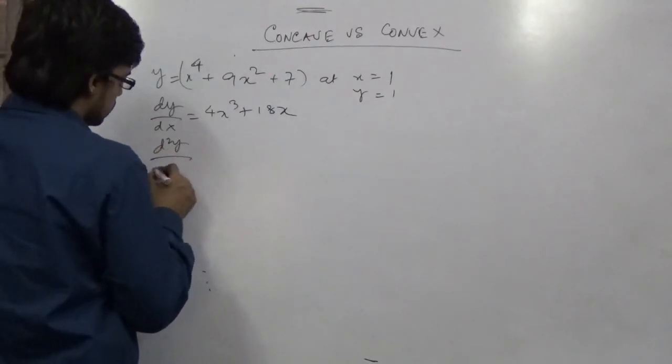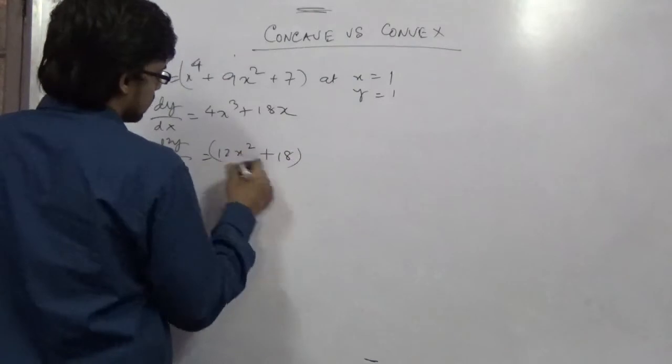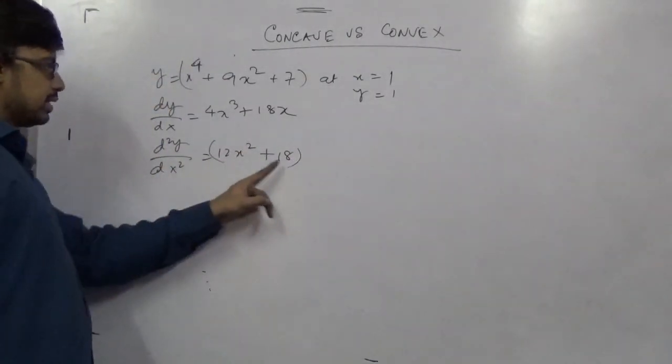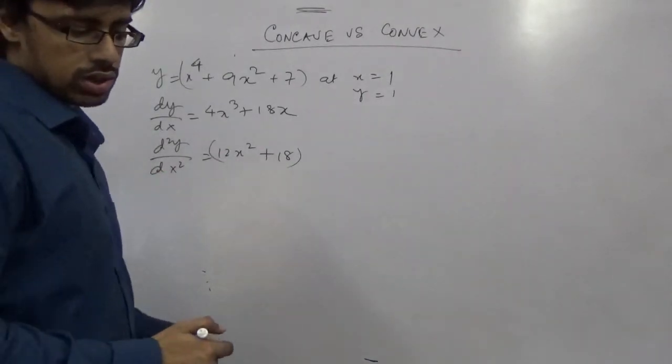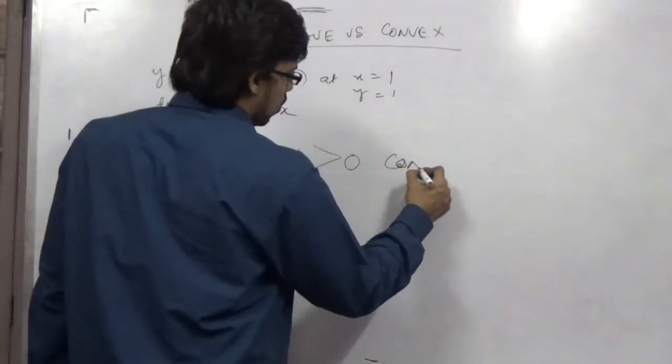What is d2y dx squared? 12x squared plus 18. So now you can see that this is positive, this is positive and x squared is always positive.